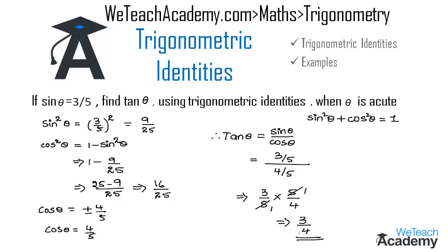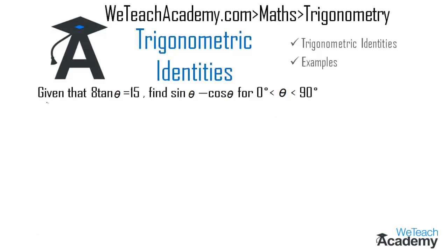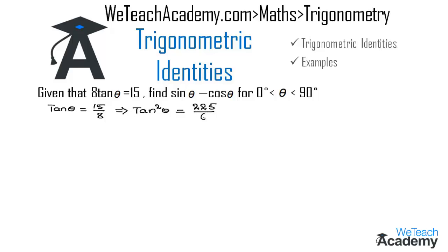Now let us proceed to one more example. The given example is: given that 8 tan theta is equal to 15, find the value of sin theta minus cos theta, where theta lies between 0 degrees and 90 degrees. We are given 8 tan theta equals 15, so tan theta equals 15 by 8. Let us find tan square theta: tan square theta equals 225 divided by 64.